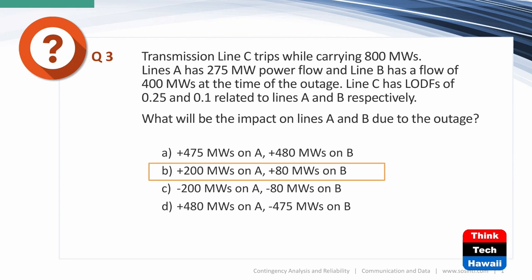When you have three parallel lines and lose one, the flow still has to get from source to load and will find its way through the remaining lines and potentially out through other lines in the interconnected system. So flow increases — in this case from 275 to 475 on line A, and an increase of 80 MW from 400 to 480 on line B. The question asks for the impact, which is 200 and 80 megawatts.